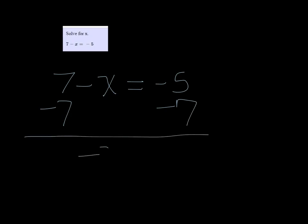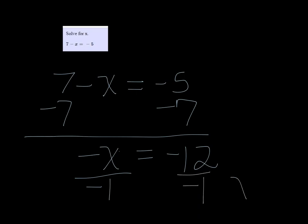That leaves me with negative x equals negative 12. This is like a negative 1 times x, so to undo that I want to divide by negative 1 on both sides. And then I get that x is 12.